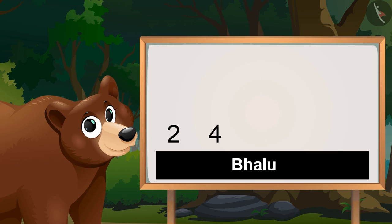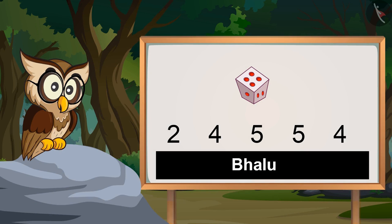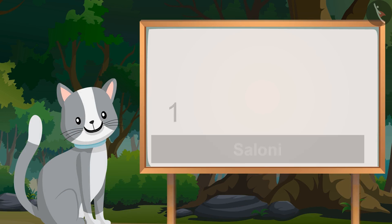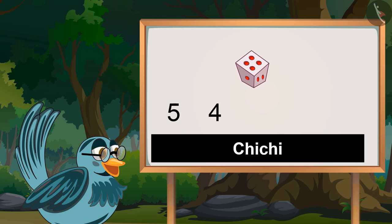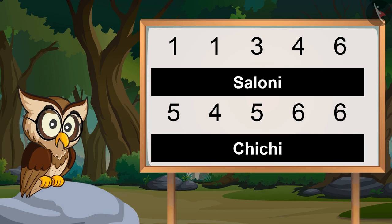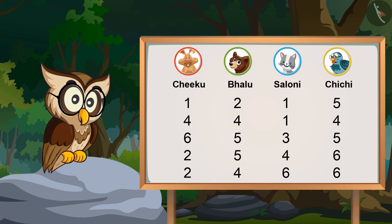Now Bhalo, it's your turn. Two, four, five, five, five, four. So Bhalo got these numbers on the dice. Now Chichi and Saloni, turn-wise roll the dice.